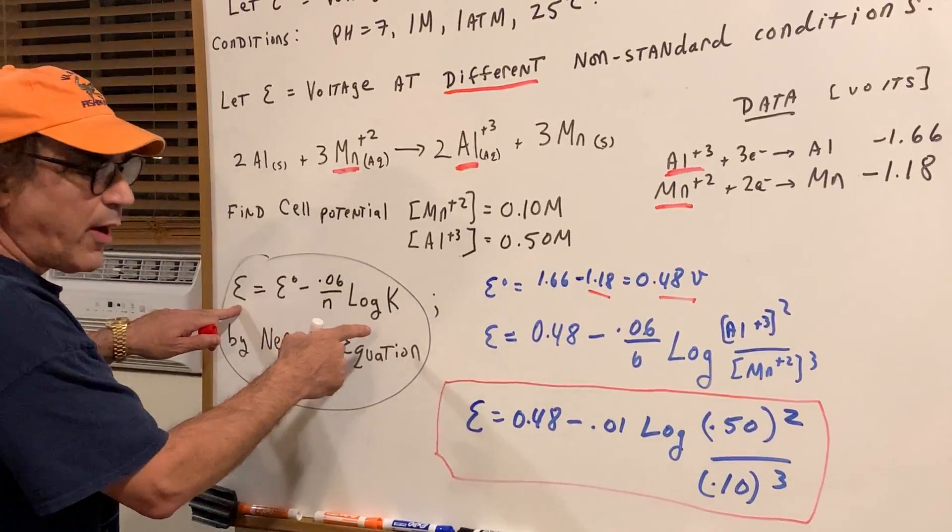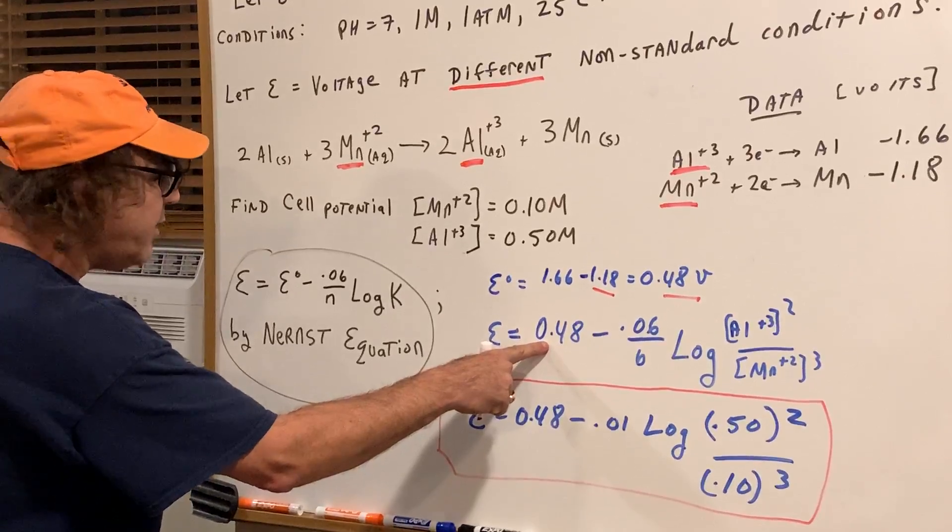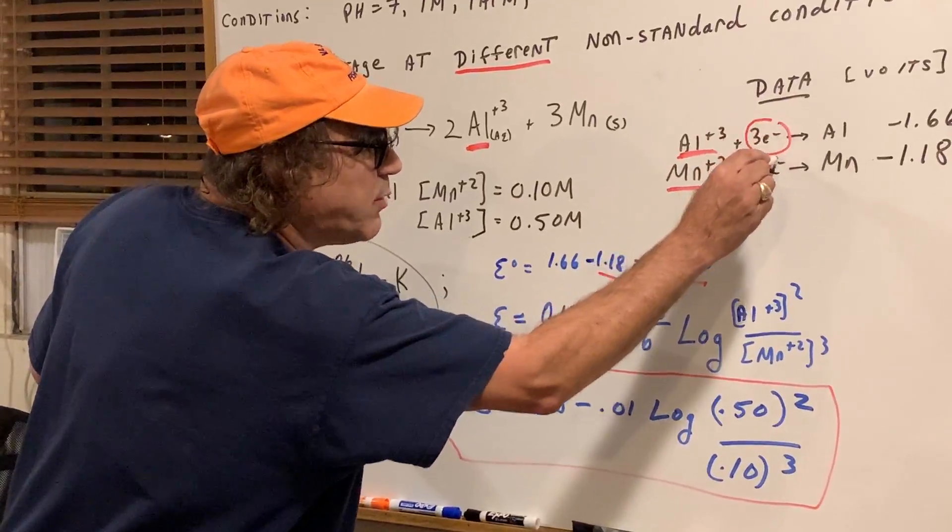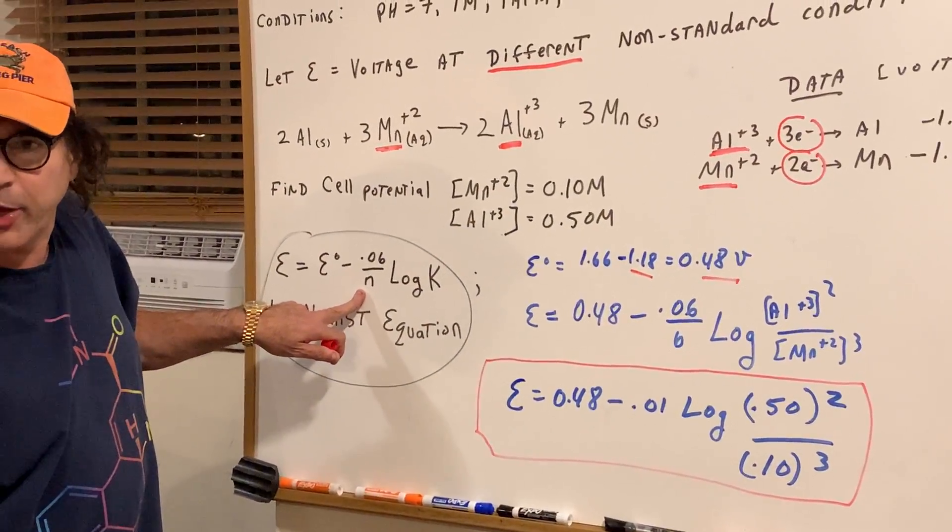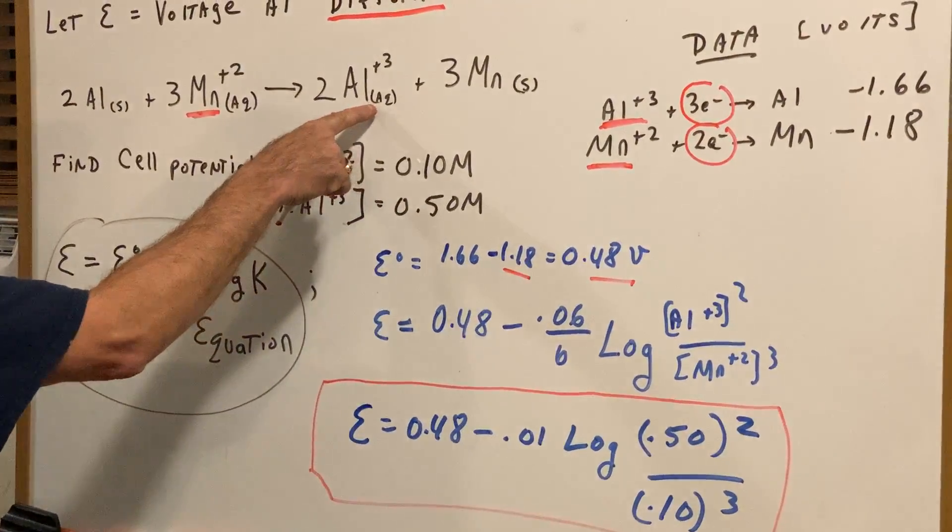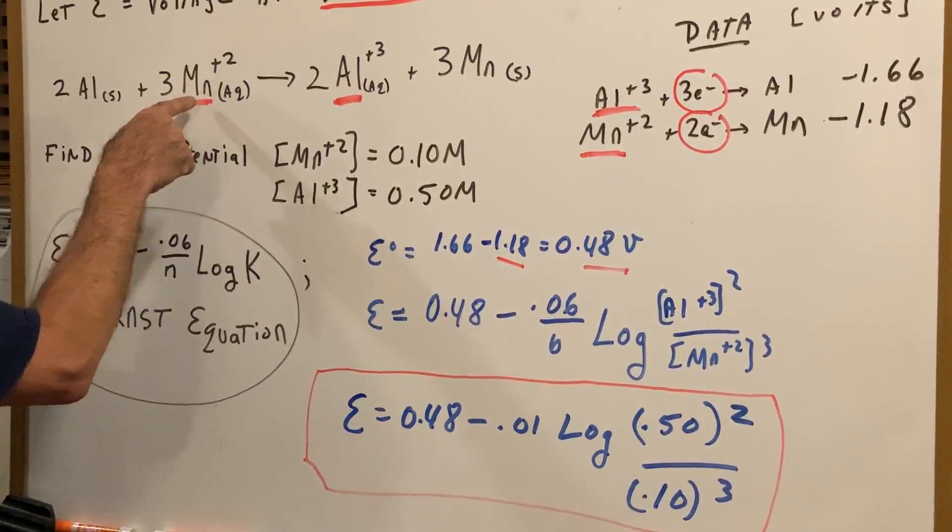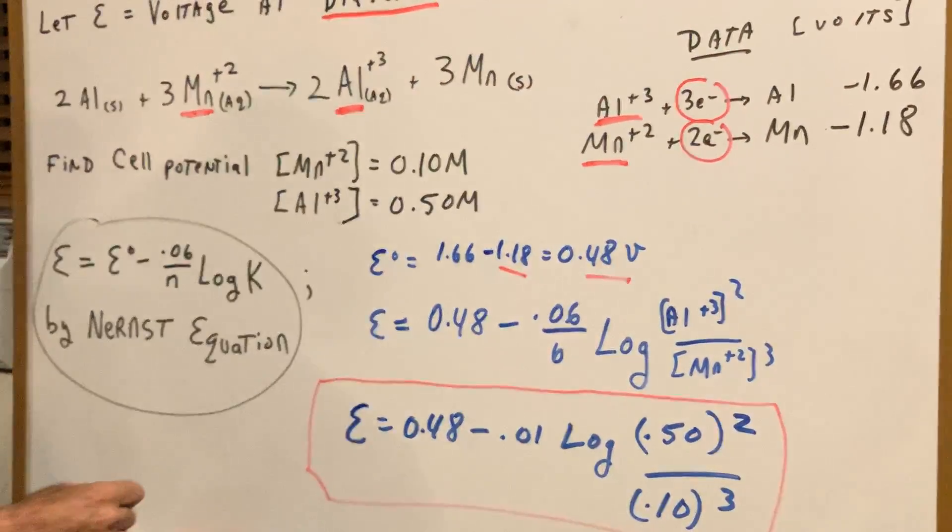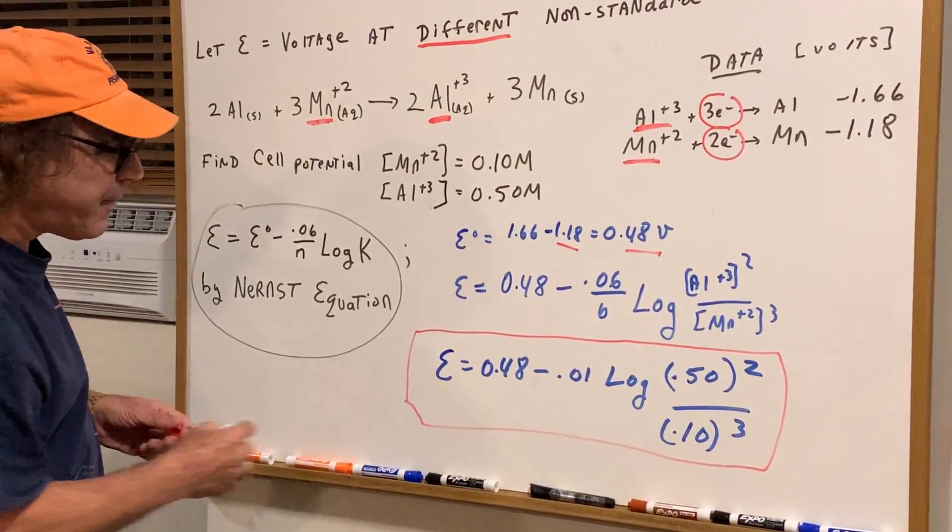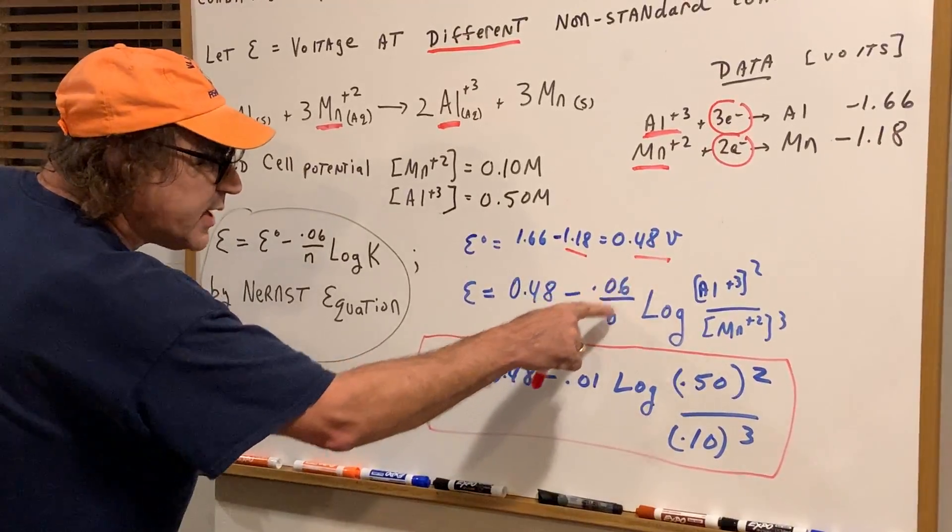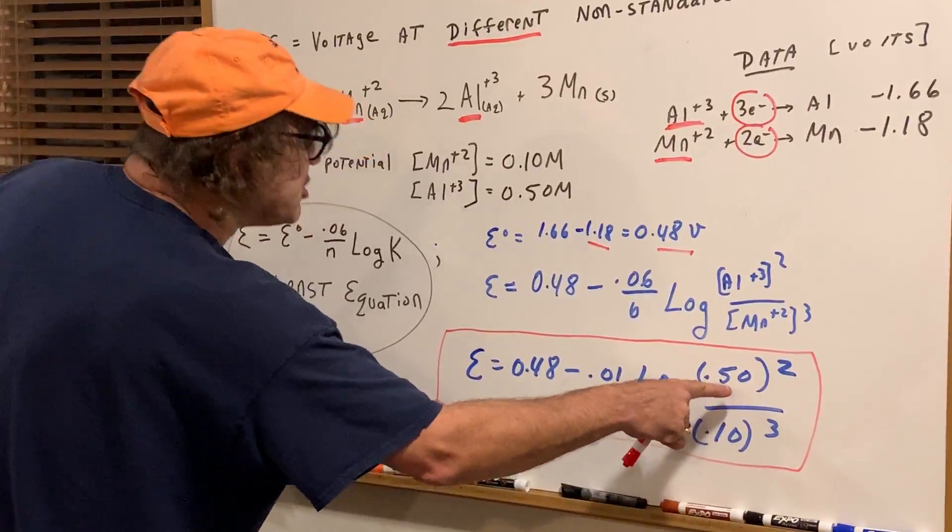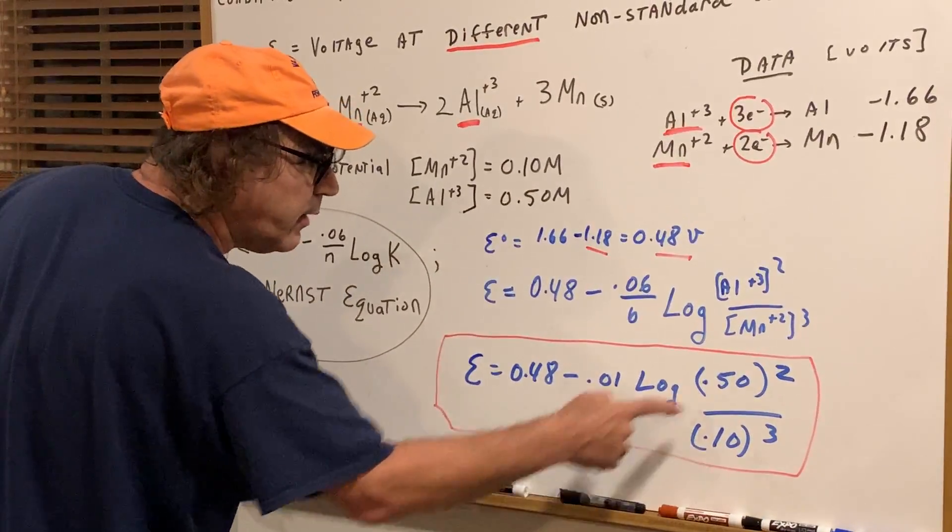Up goes the formula for the Nernst equation. There's the E0, 0.48, minus 0.06 over N. Now N is the number of electrons transferred. An easy way to do it is just think what's the common denominator between three and a two. That's a six. So I put in a six times the log of the products, that's the aluminum plus three squared divided by the manganese cubed. Just like any equilibrium constant you omit the solids. Plugging it in and putting it all together and we're just going to set it up. You get 0.48 minus 0.06 over 6 is 0.01 times the log of the aluminum plus three squared which is 0.50 squared over 0.10 cubed.